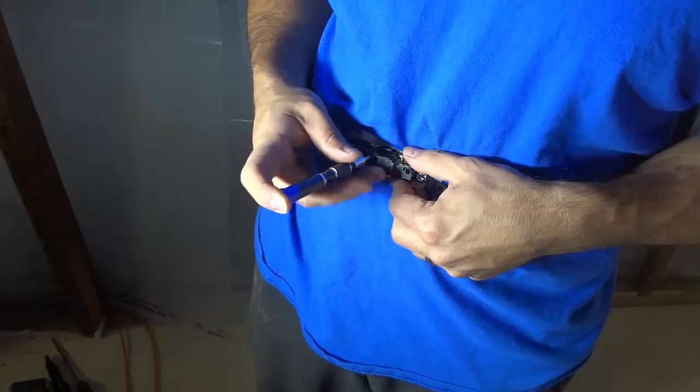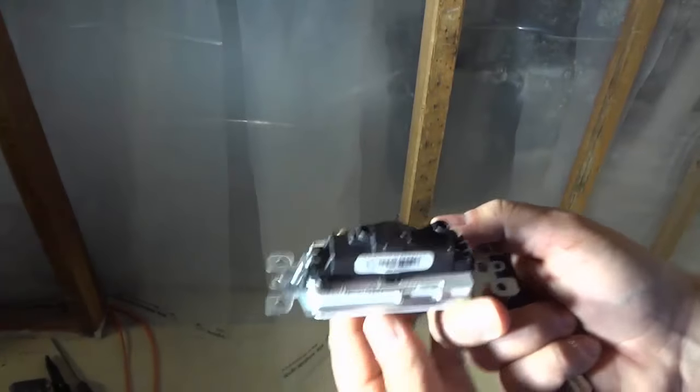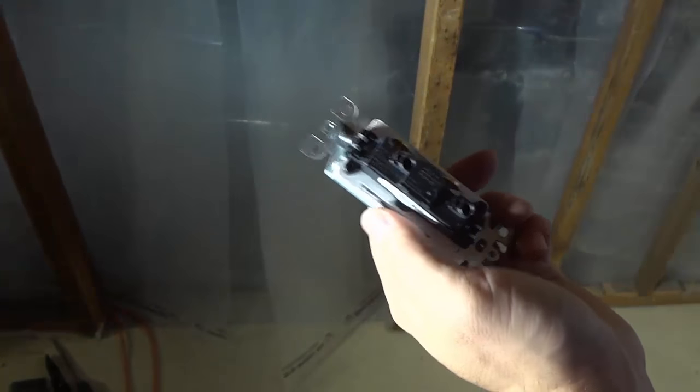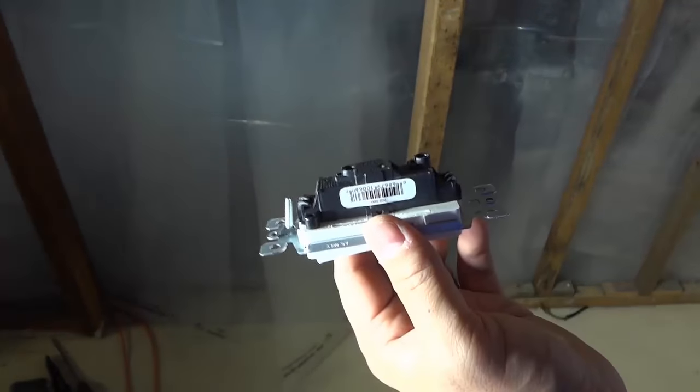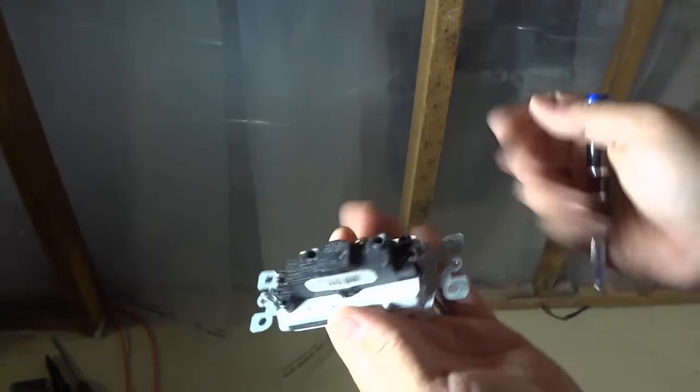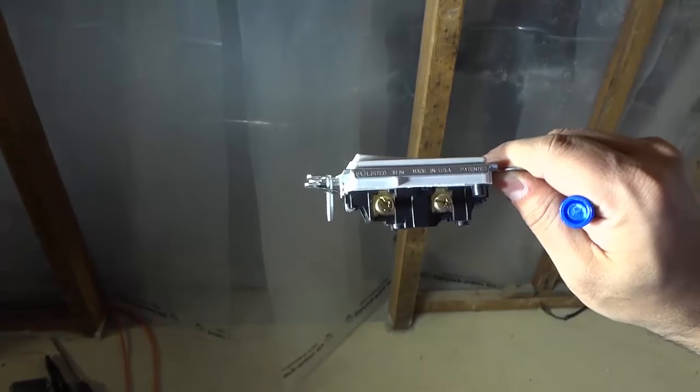And that's basically it. In this video I have shown you how to remove wiring that has been pushed into the back of a light switch. It's actually a really simple process and I have shown you exactly how to do it with step-by-step instructions. That's all I have for you today, thanks for watching.